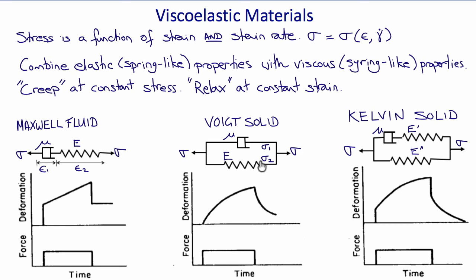In the Voigt solid model, when the force is applied, initially nothing happens because it takes a finite time for the syringe to stretch out. As it does, it stretches the spring, which slows down the syringe. When the force is removed, the spring gradually brings the material back to its original state — more solid-like behavior. A Kelvin solid is similar to the Voigt solid but has an additional spring in series, so when force is applied it instantaneously stretches, then creeps like a Voigt solid, and upon unloading it instantaneously recoils somewhat, then creeps back to its original natural state.